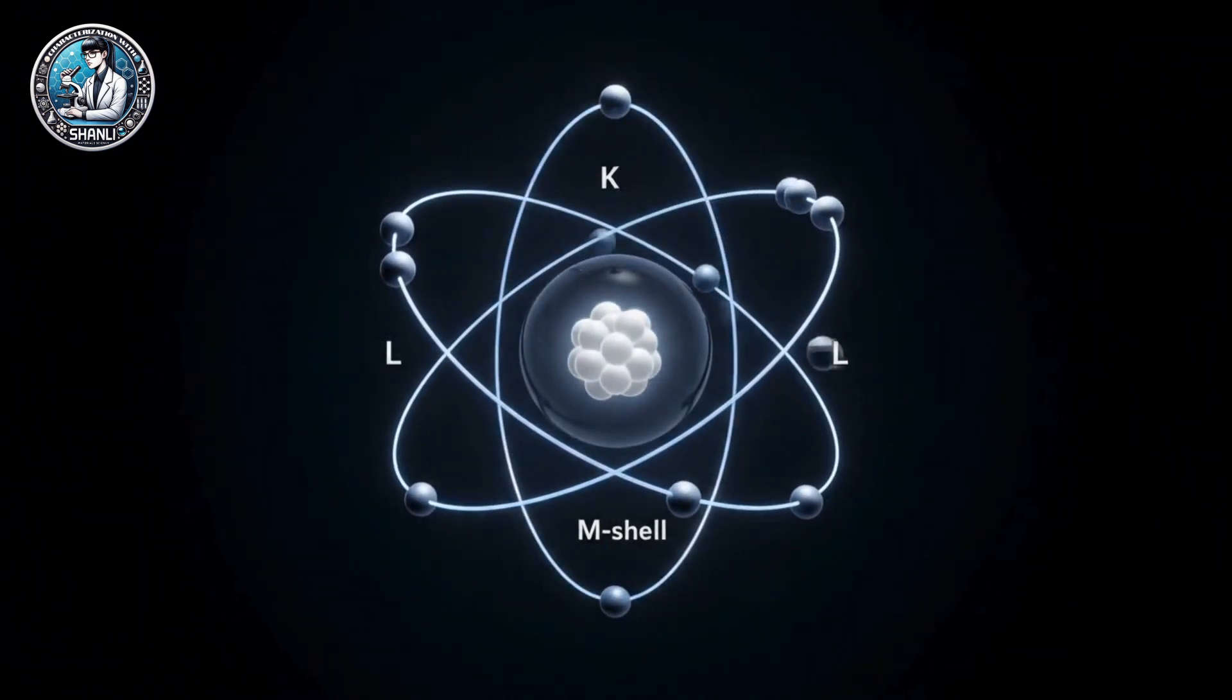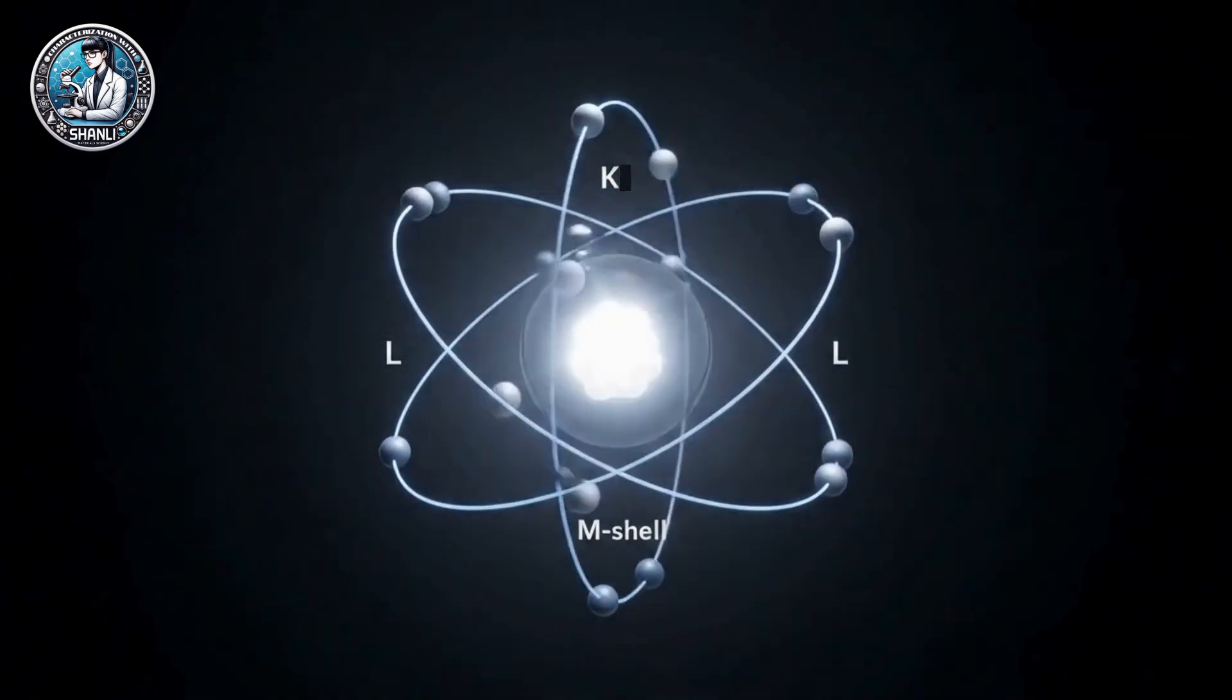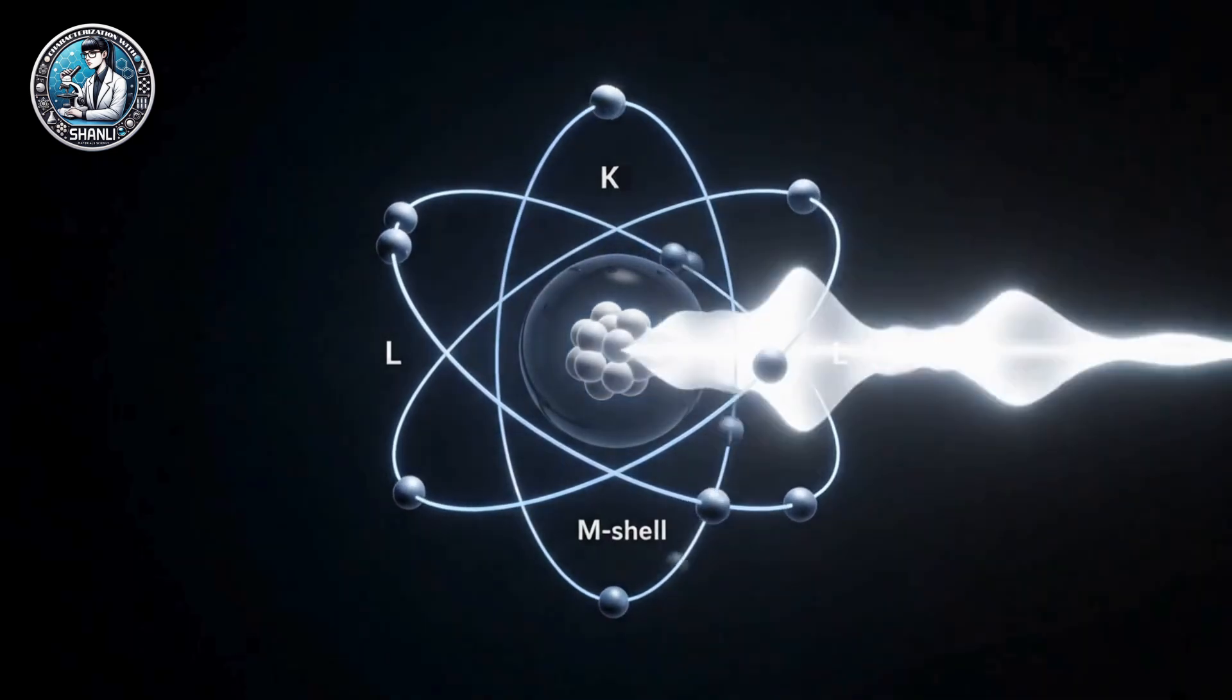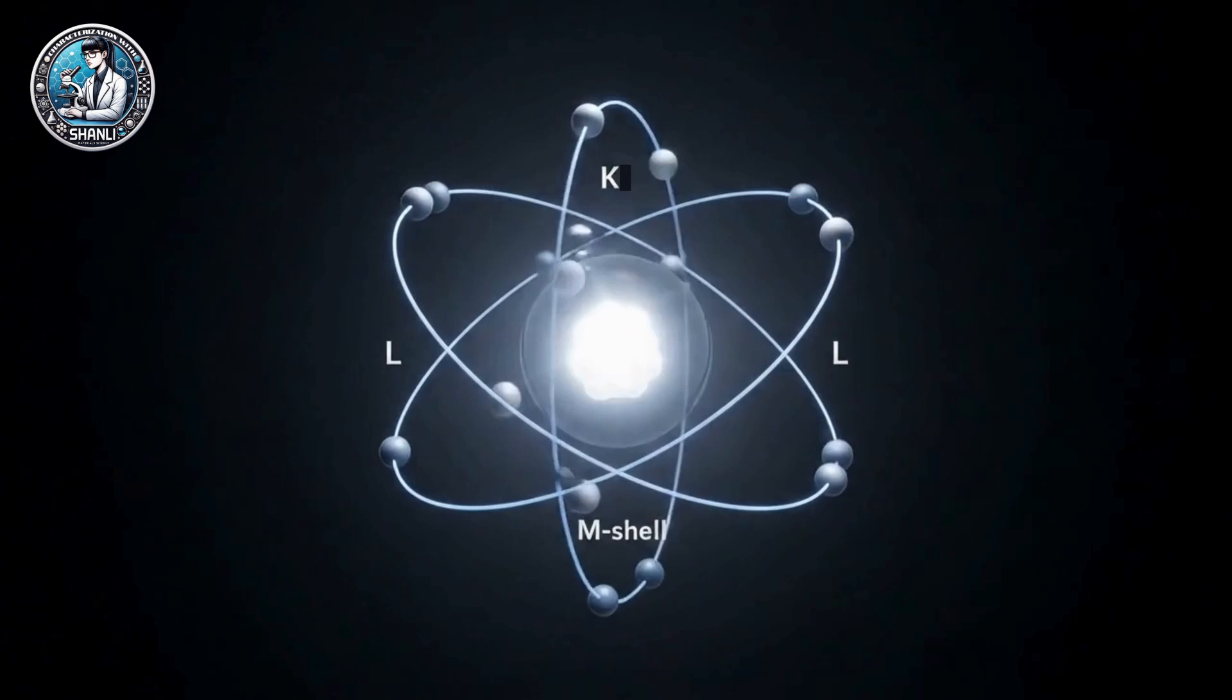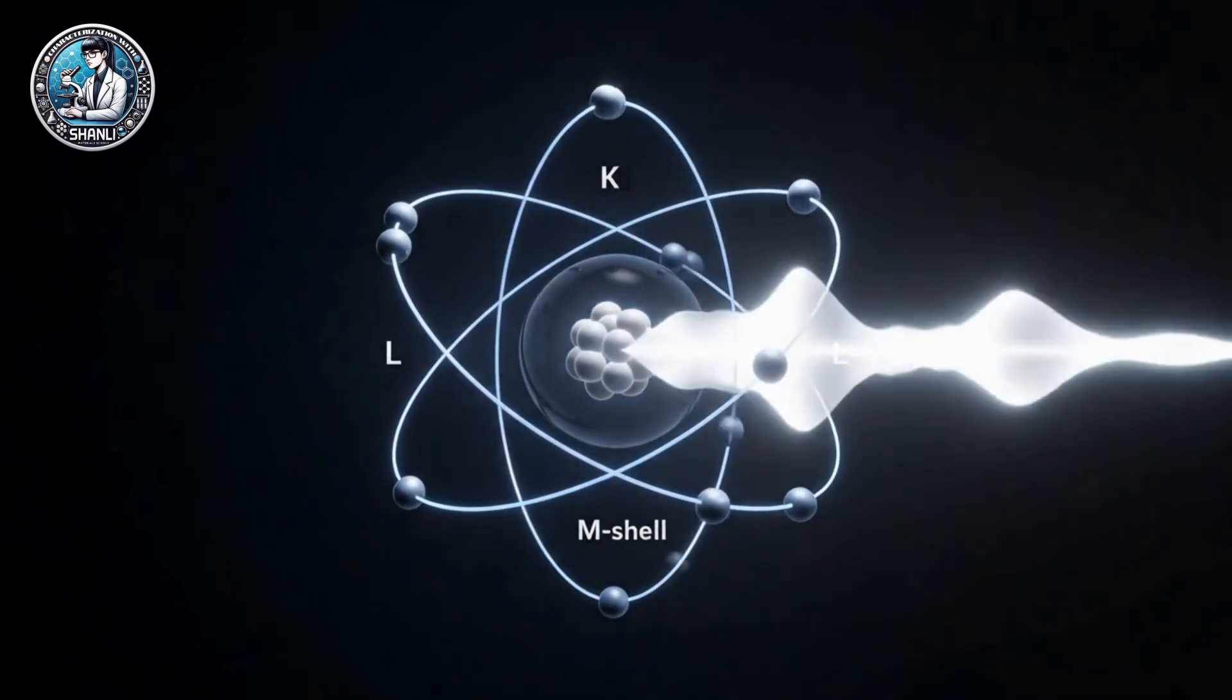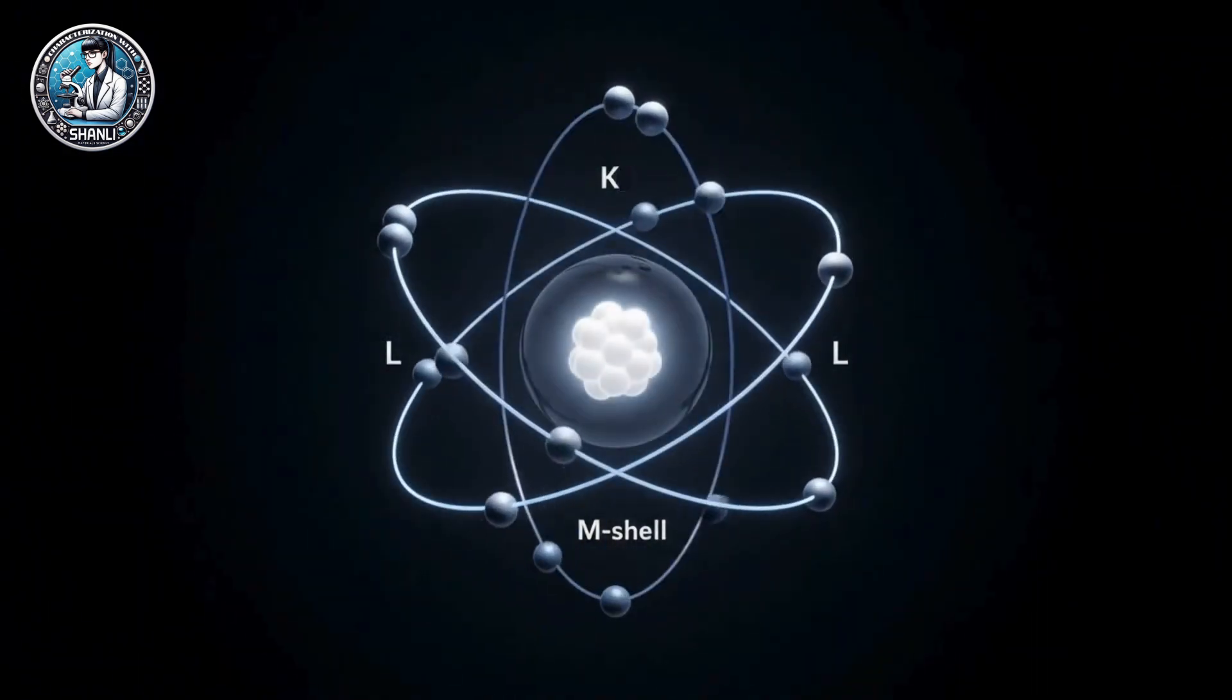To regain stability, an electron from a higher shell like L fills a vacancy and excess energy is emitted as an X-ray photon. This emission, known as a characteristic X-ray, has an energy equal to the difference between the two shells.